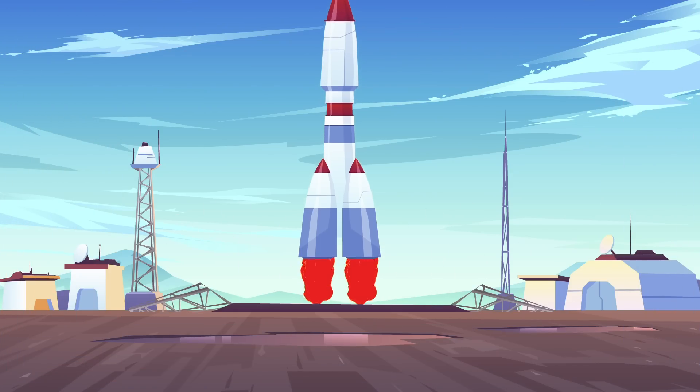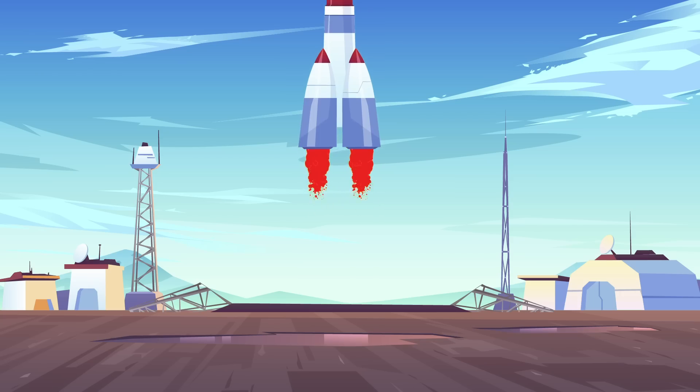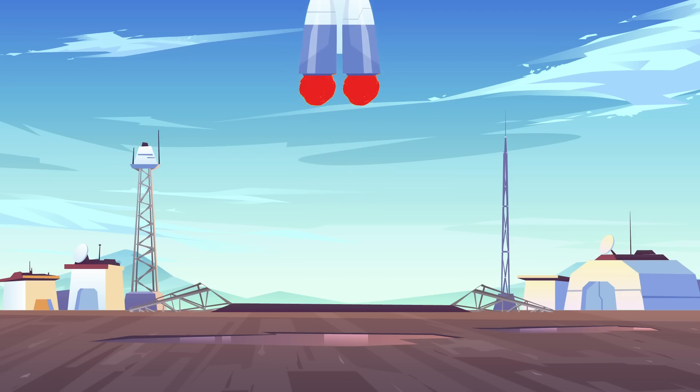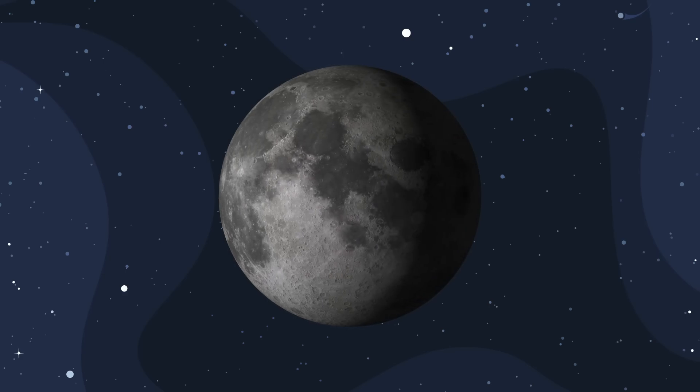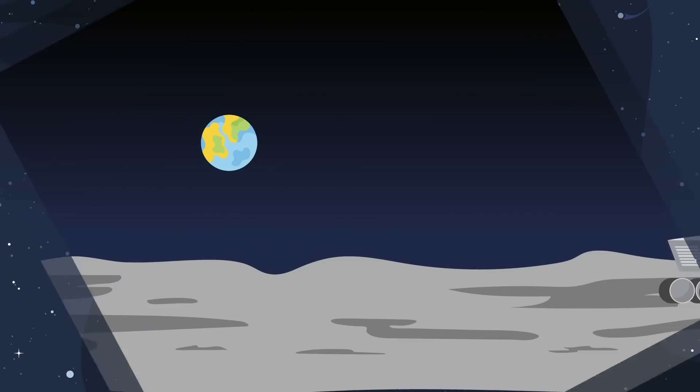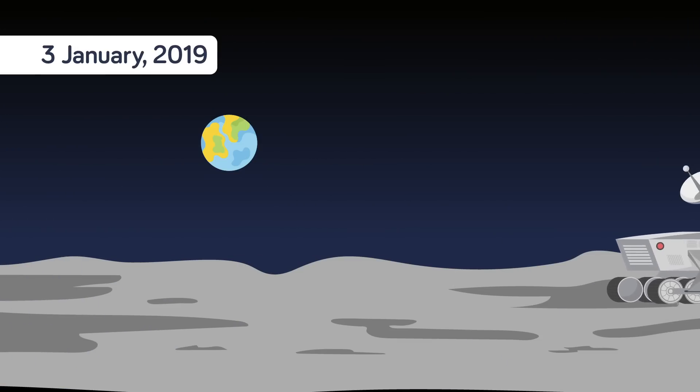As you wait for your boss and the rest of the team to come in, you think back to December 7th, 2018, when the China National Space Administration launched Chang'e-4. The main goal of the mission was to land on the dark side of the moon and collect data. On January 3rd, 2019, China became the first country to successfully land a spacecraft on the far side of the moon.